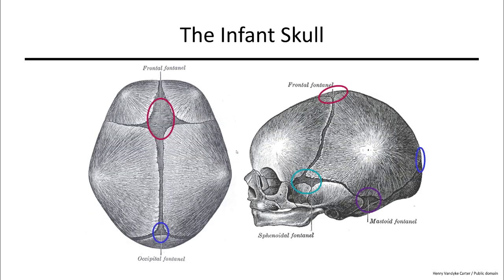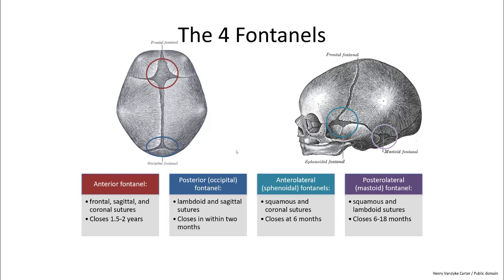We can see the fontanelles indicated here. The anterior fontanelle is circled in red. On the posterior side, where the sagittal suture meets the lambdoid suture, is the posterior or occipital fontanelle. On the anterior lateral surface in teal, we have the anterior lateral or sphenoidal fontanelles. And between the occipital bone, temporal bone, and parietal bones, we see the posterior lateral fontanelle indicated in purple.